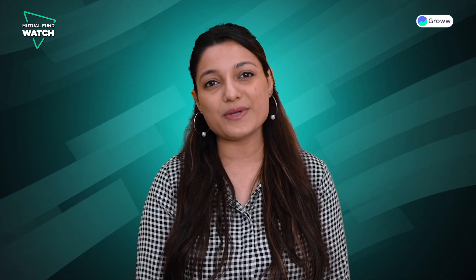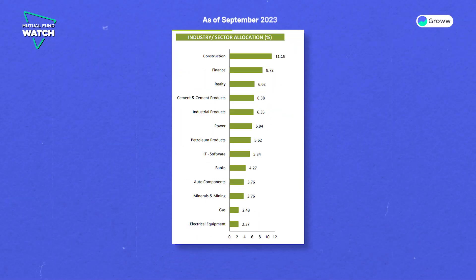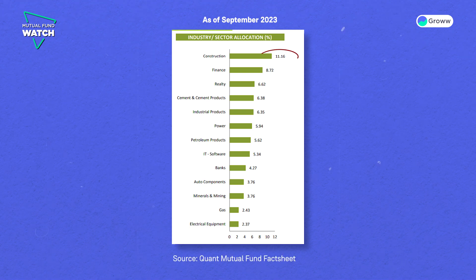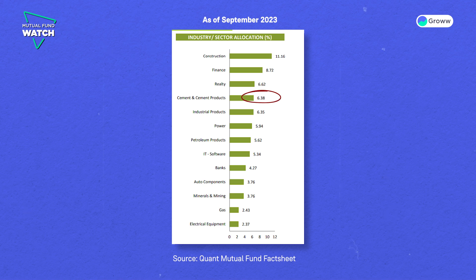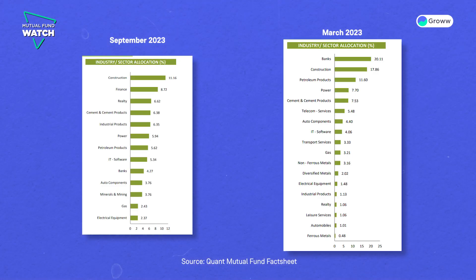Now let's see the industry allocation data. As of September 2023, the fund's top 5 industry allocations are: Construction 11.16%, Finance 8.72%, Realty 6.62%, Cement and Cement Products 6.38%, and Industrial Products 6.35%. If you check the fund's sector allocation in March 2023, the top 5 sectors were not the same, which is quite evident from the high portfolio turnover ratio.